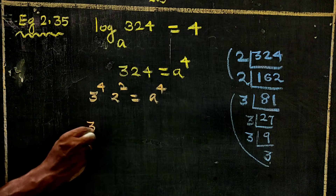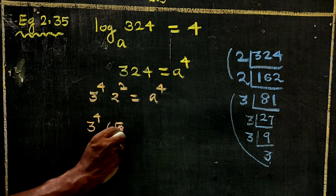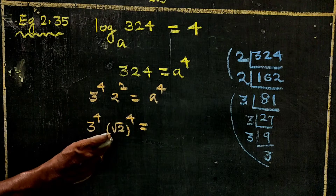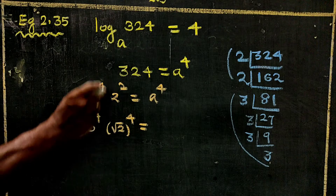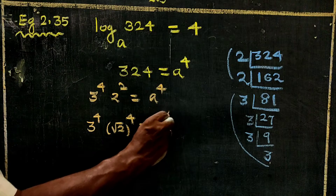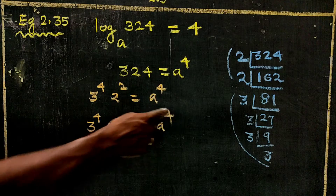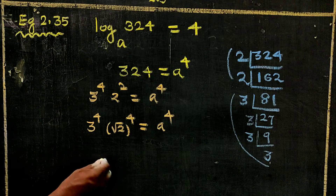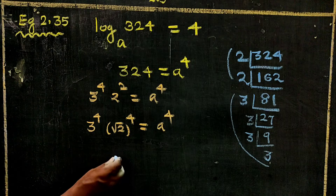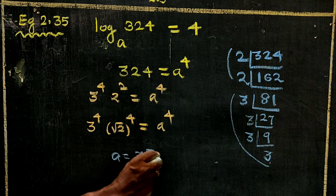2 squared is equal to A to the power 4. There is no power 4. If the power 4 is equal to A power 4, then A is equal to 3.